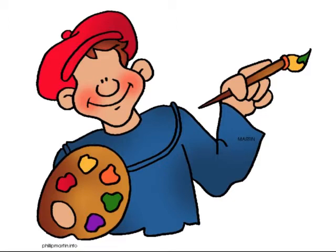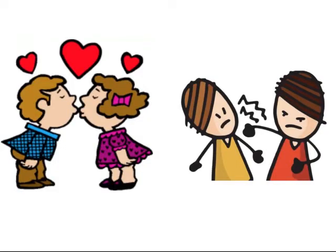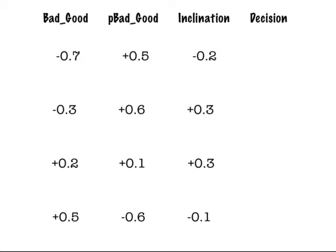You blend these twelve factors together to get the precise effect you want. When you combine two numbers, you get a number we call the inclination value. Whenever a character must choose among multiple options, he always goes with the one with the highest inclination value. For example, suppose Ann has a choice between doing something nice to Joe or something nasty. The choice should be based on two factors: how Bad Good Ann is, and how much Ann likes Joe — which we call P Bad Good. We just add these two numbers together to get the inclination to do the nice thing, and use their negatives to get the inclination to do the nasty thing.